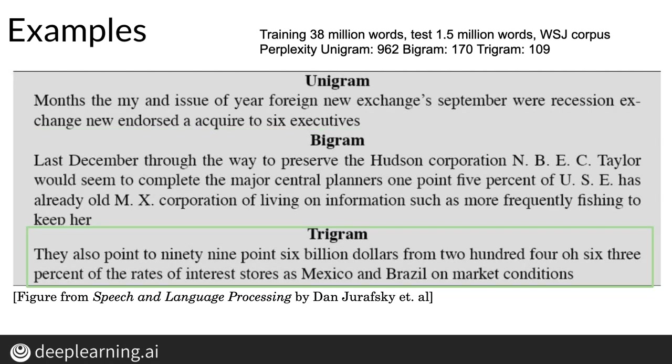The perplexity is now equal to 109, much closer to the target perplexity of 20 to 60 I mentioned earlier. Later in the specialization, you'll encounter deep learning language models with even lower perplexity scores.